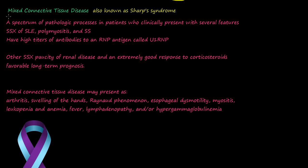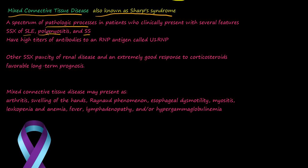The last systemic autoimmune disease we'll cover is mixed connective tissue disease, also known as Sharpe's syndrome. It's a spectrum of pathological processes in patients who clinically present with several signs and symptoms of SLE, polymyositis, and systemic sclerosis or scleroderma. Go back and watch the videos on SLE and systemic sclerosis to get a general idea of the signs and symptoms of those diseases.